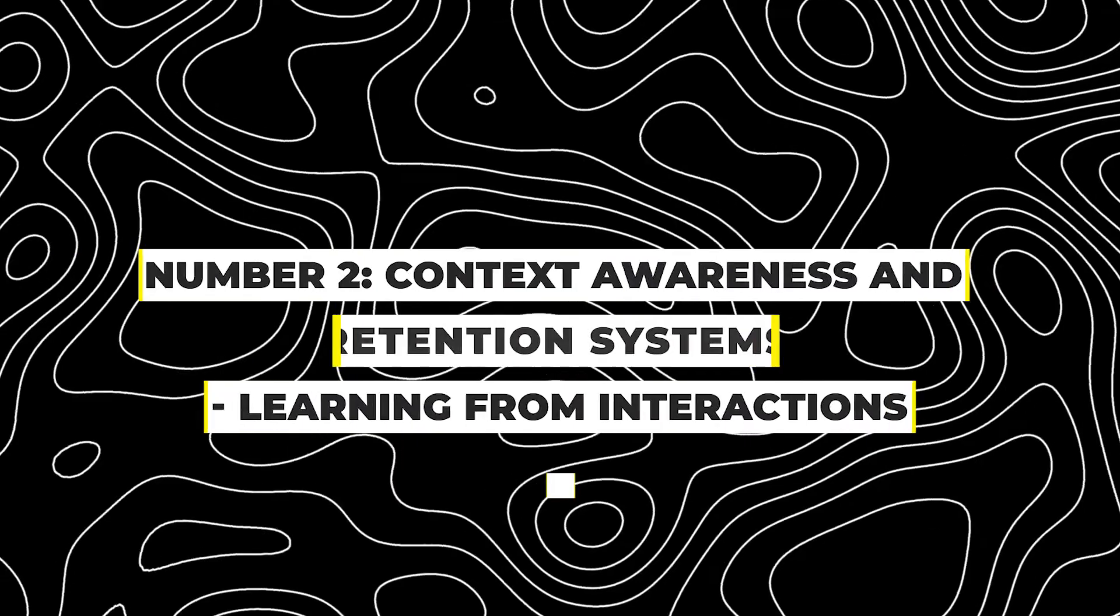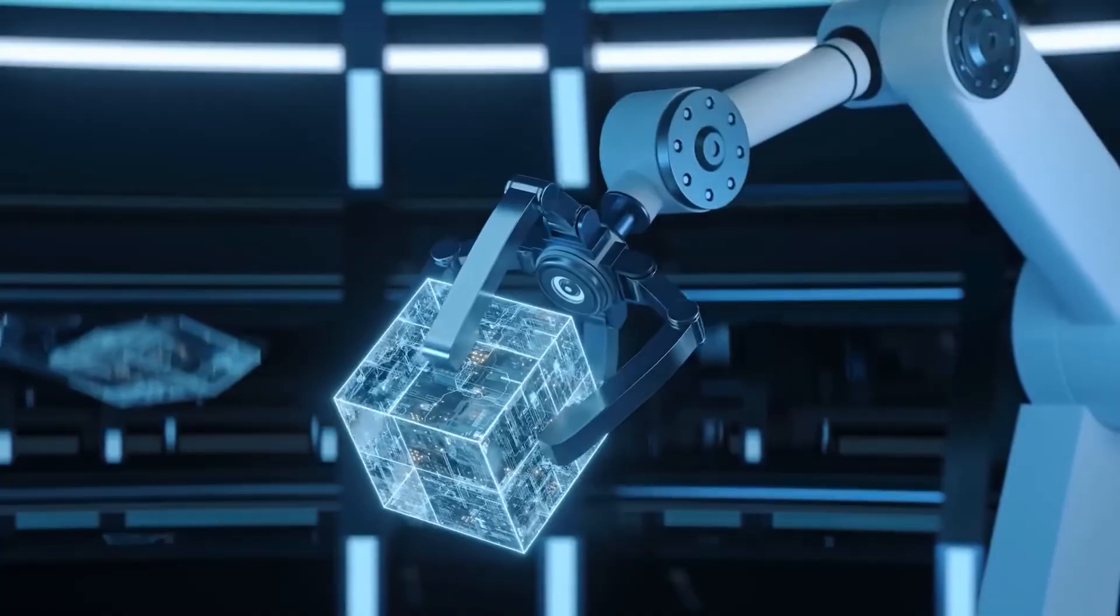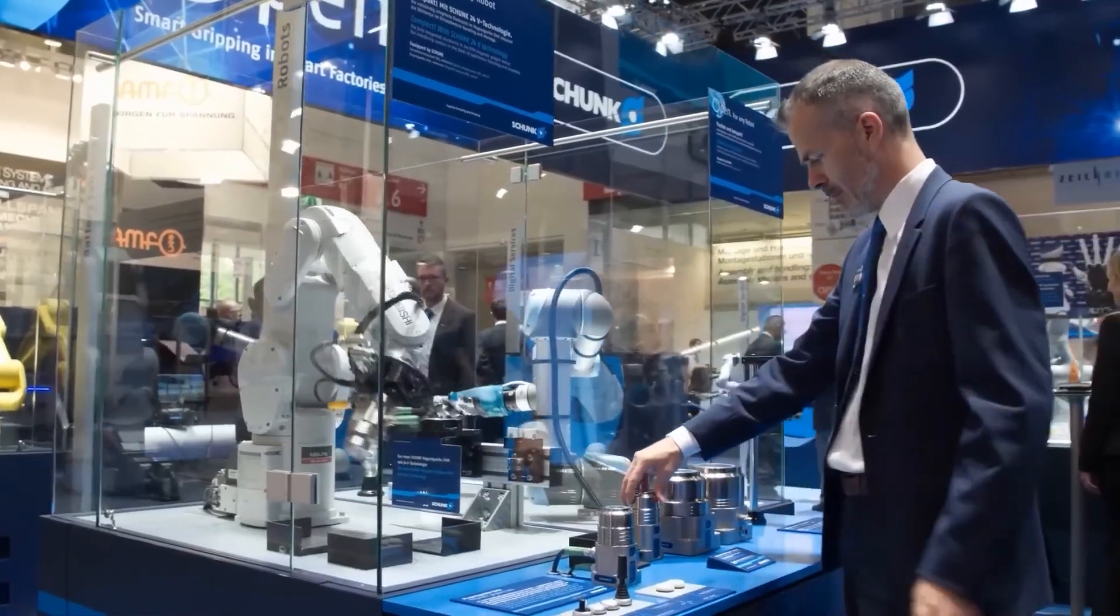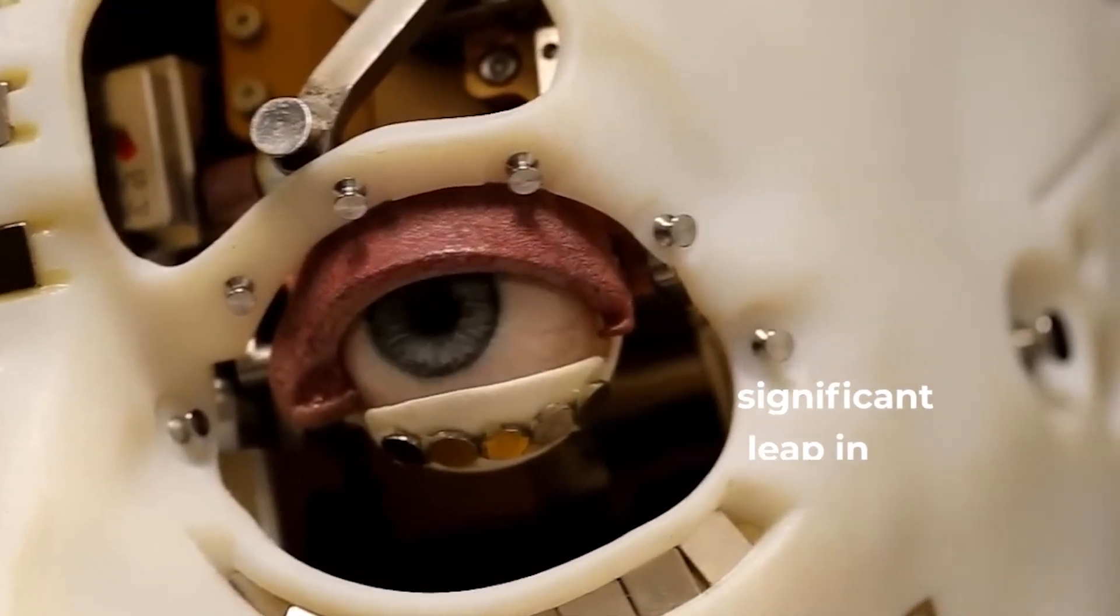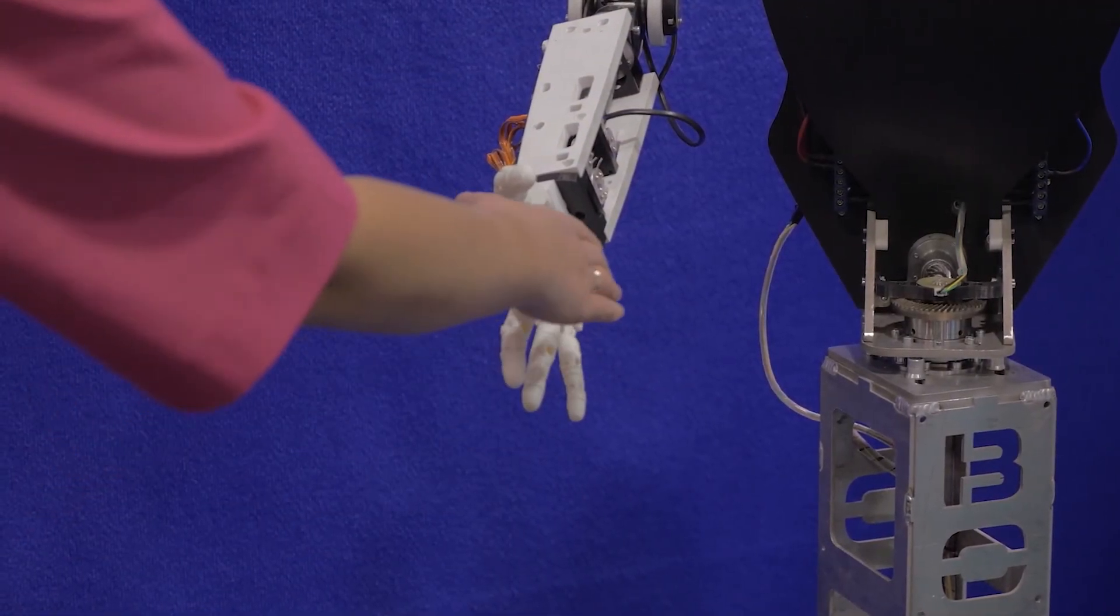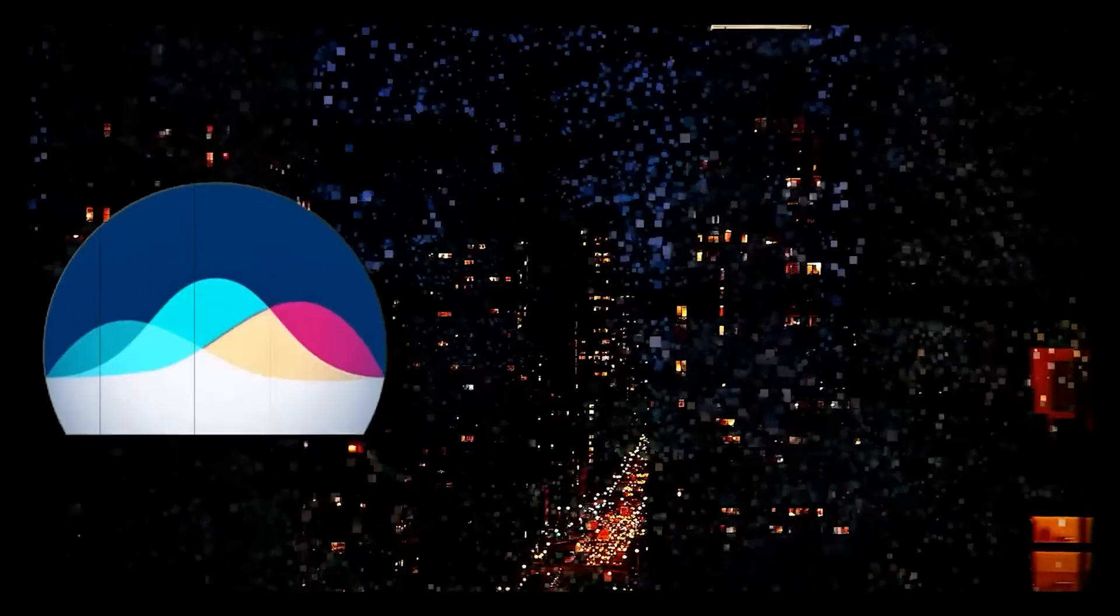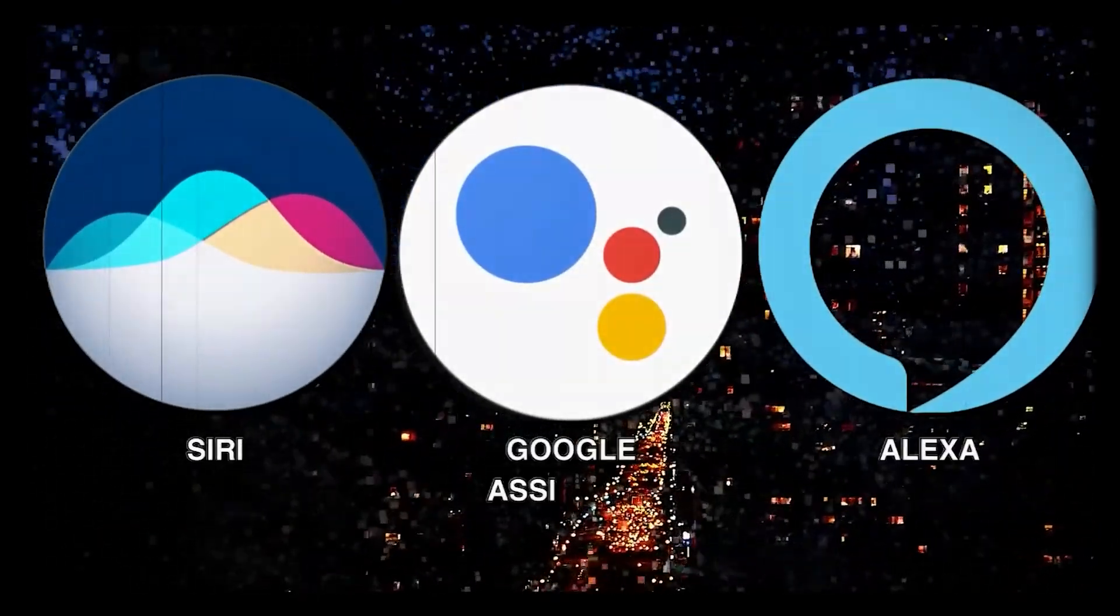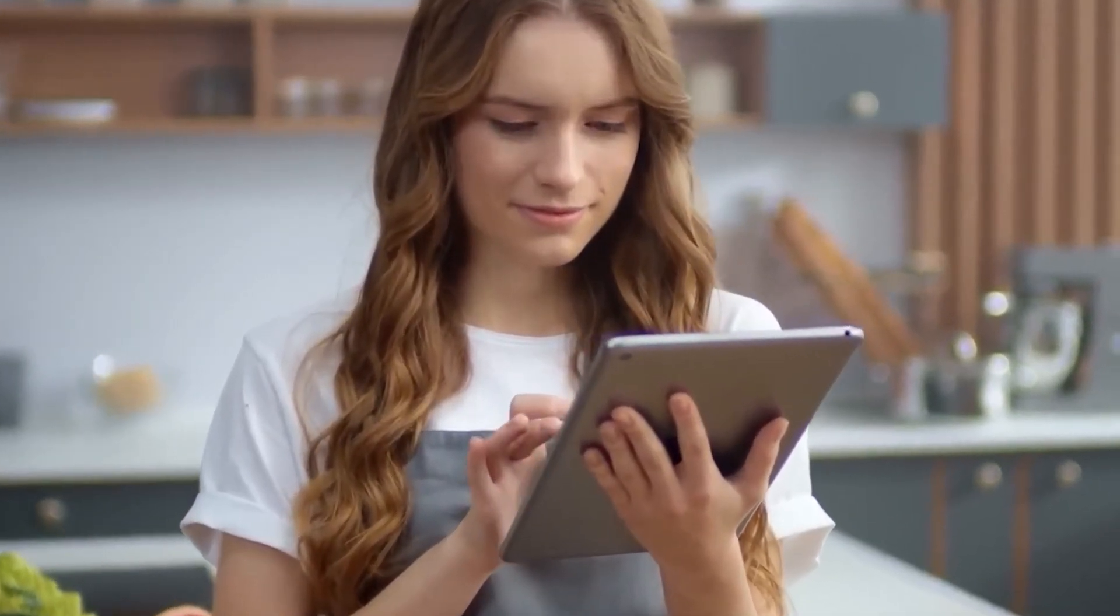Number 2. Context awareness and retention systems, learning from interactions. Progressing to the second stage, context awareness and retention systems represent a significant leap in AI capabilities. These systems can understand and retain context, learning from previous interactions. Smartphone assistants like Siri or Google Assistant showcase this stage, processing commands while adapting based on past interactions.